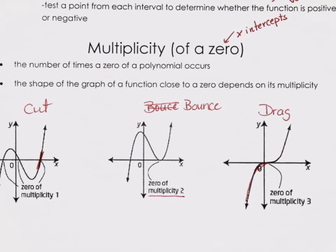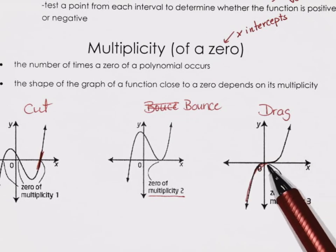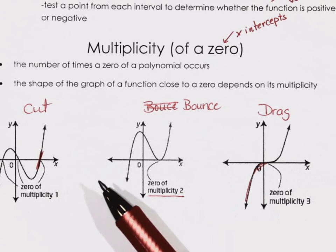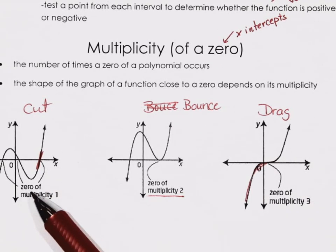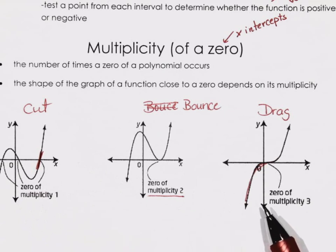So we've got a cut, a bounce, and a drag. It's not completely flat along the x-axis. It comes down and gets really close — like an asymptote — then cuts through and gets really close again before it drops. The cut goes right through; the bounce is obvious; the drag takes a while to get the feel of. You have to be very distinct between a drag and a cut.